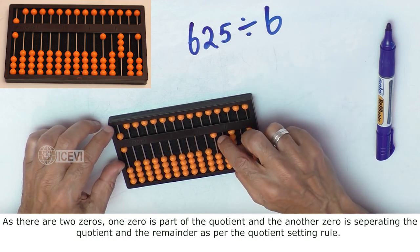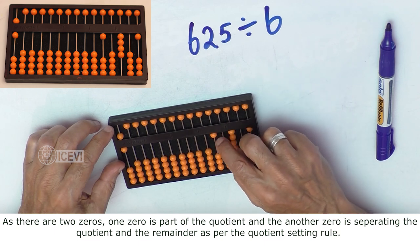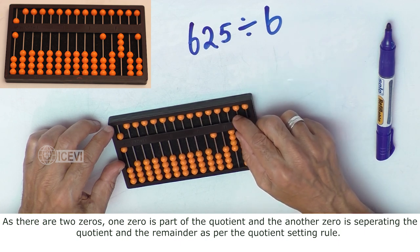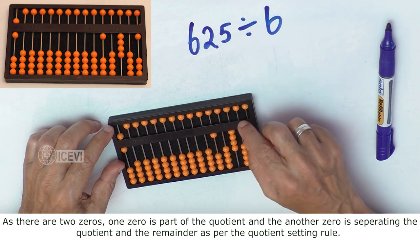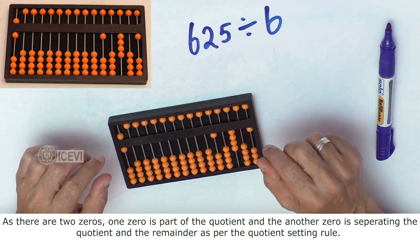There are two zeros. One zero is part of the quotient and another zero is separating the quotient and the remainder as per the quotient setting rule.